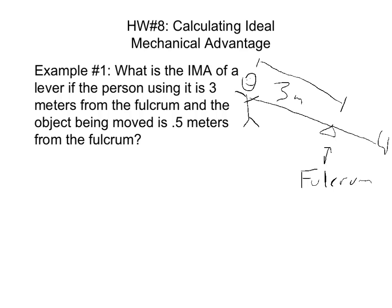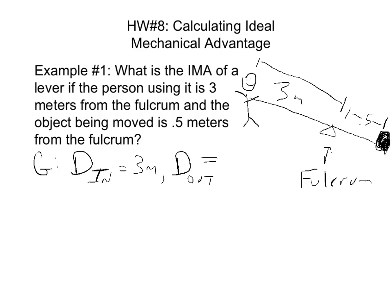The object — let's say they're trying to move a rock — is only 0.5 meters from the fulcrum. So for our givens: D_in, the distance from the fulcrum to the person where the force goes in, is 3 meters. And D_out, the distance between the fulcrum and the object where the force comes out, is 0.5 meters.